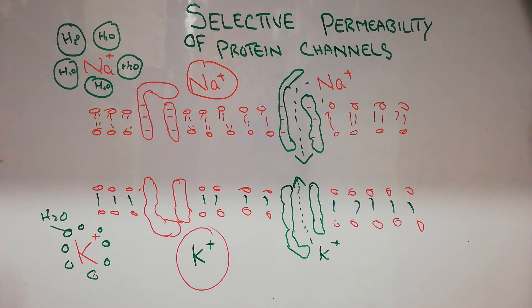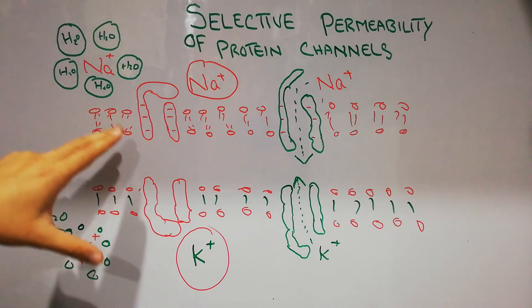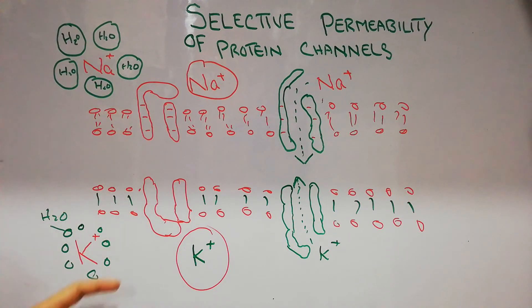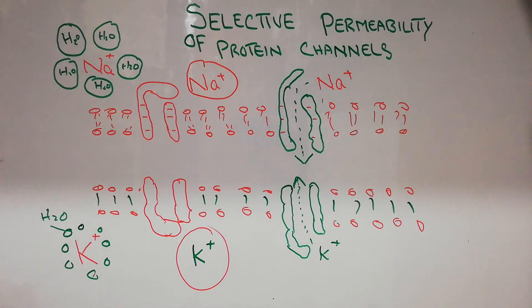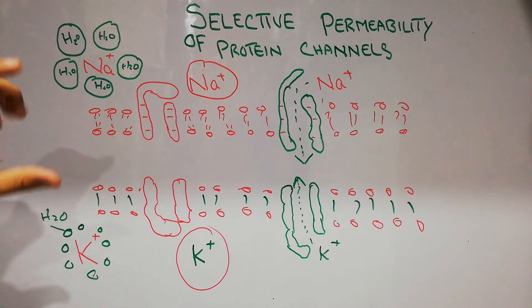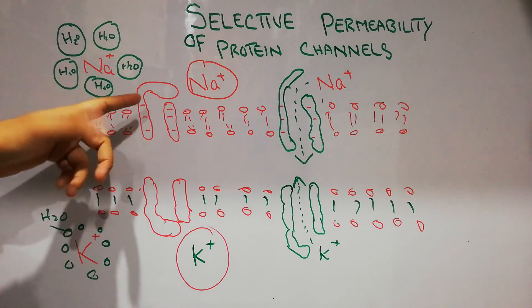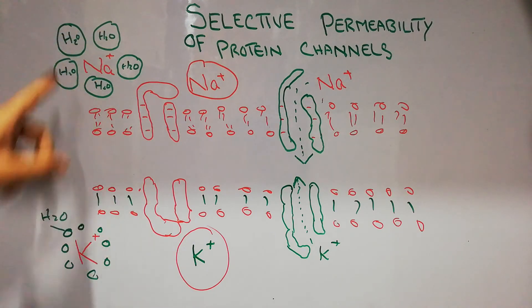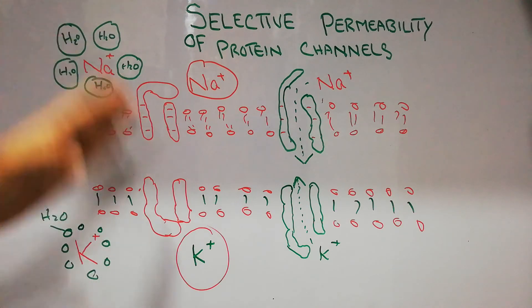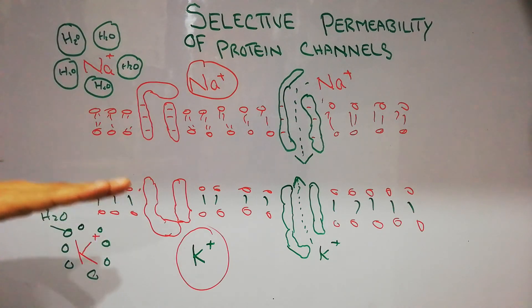Regarding the opening and closing of the gates, the gates of the sodium channel are on the outside of the membrane, while the gates of the potassium channel are on the inner side of the membrane. The gates of both sodium and potassium channels open with the loss of negativity on the inside. The more negative the inside of the plasma membrane, the tighter the gates will be closed, not allowing sodium to pass. Once the negativity on the inside decreases, the gates open.